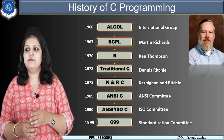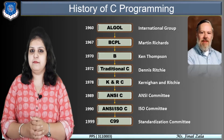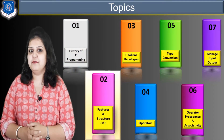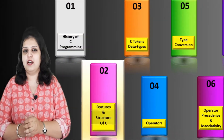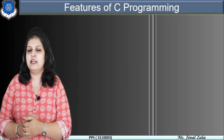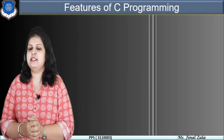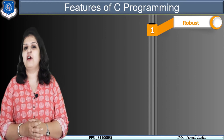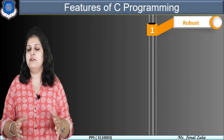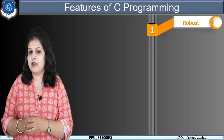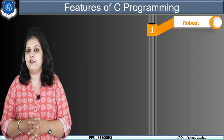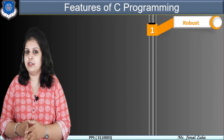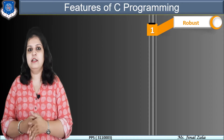Now let us move to the features of C programming. Let us see the importance of C programming — why we have to learn it and what is the requirement. The first feature is that C is a robust language. Robust means strong. It is called robust because in C programming we have a rich set of operators and different inbuilt functions.